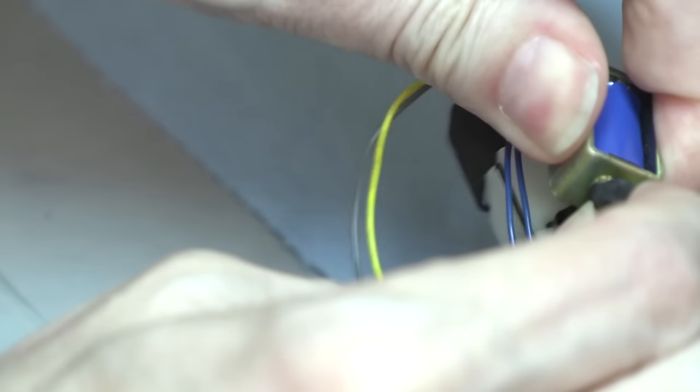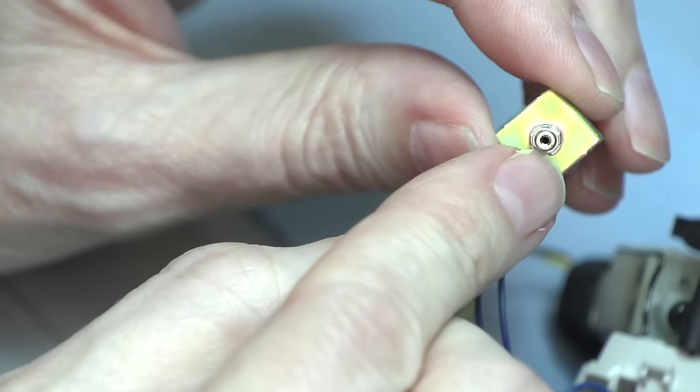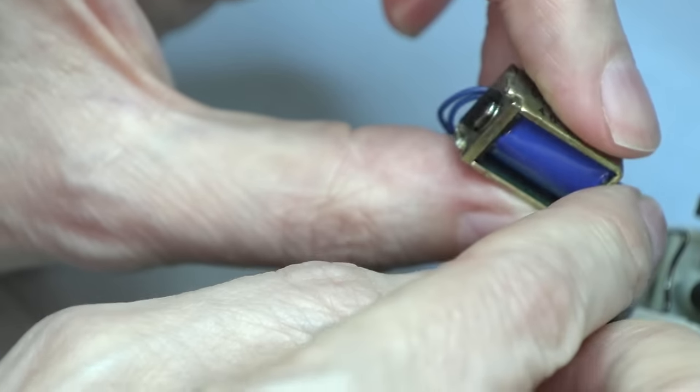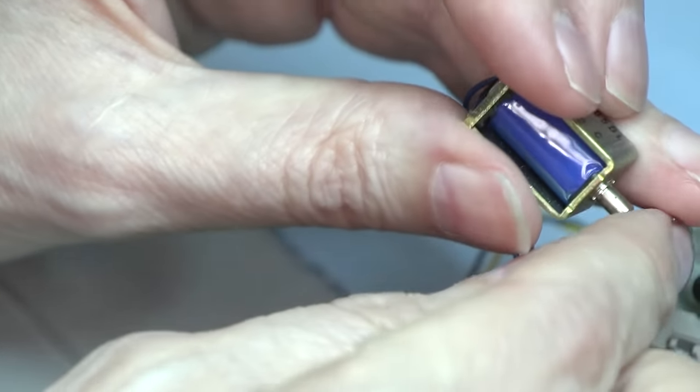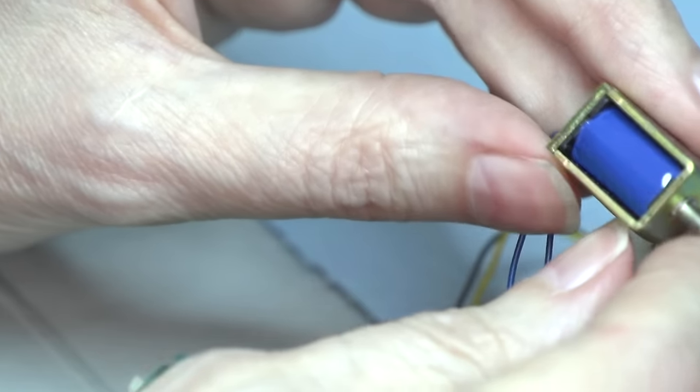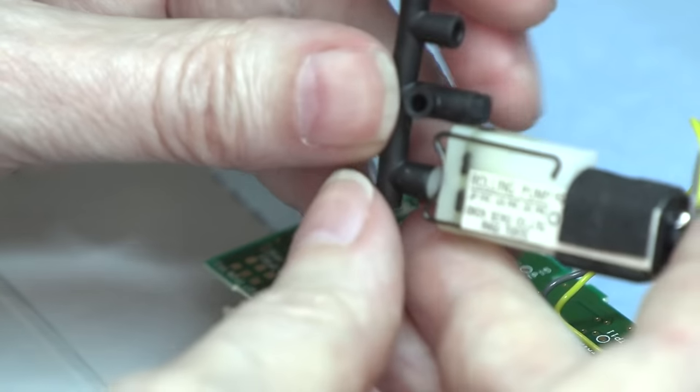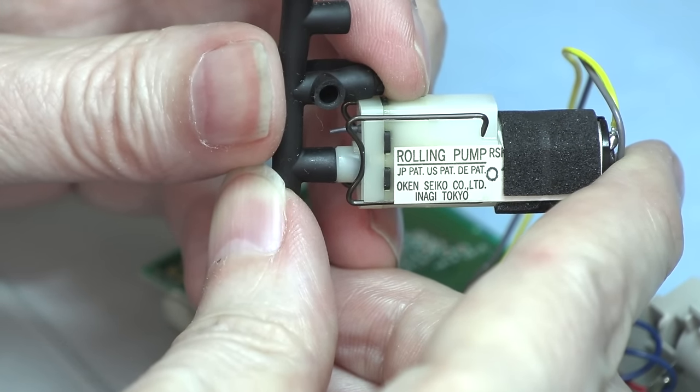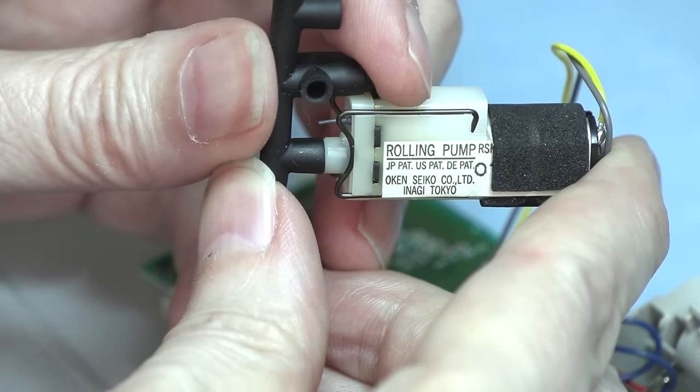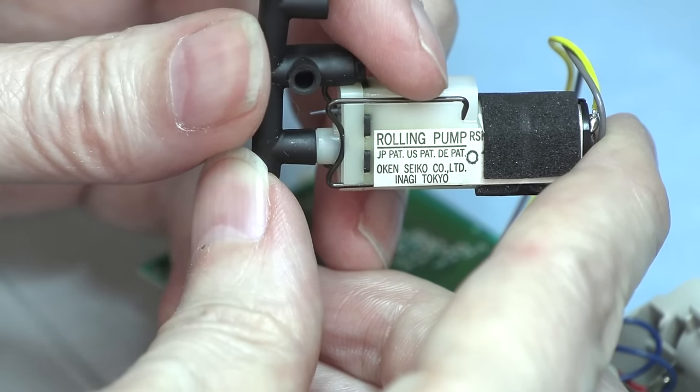A little nozzle there, so yeah, so that's all that is. It's just a valve. That's gotta be pretty handy for something, and this side we've got a rolling pump. Yeah, oh, Japanese patent, US patent, German patent, Okenseiko company Limited.